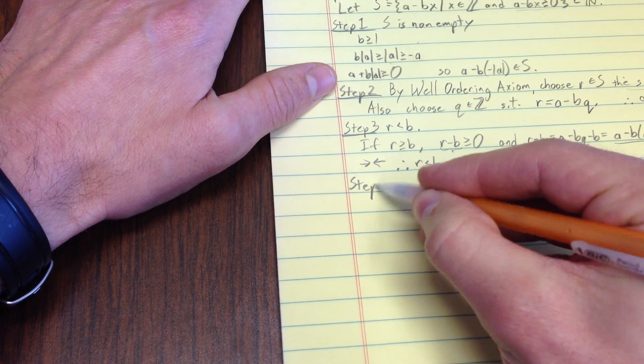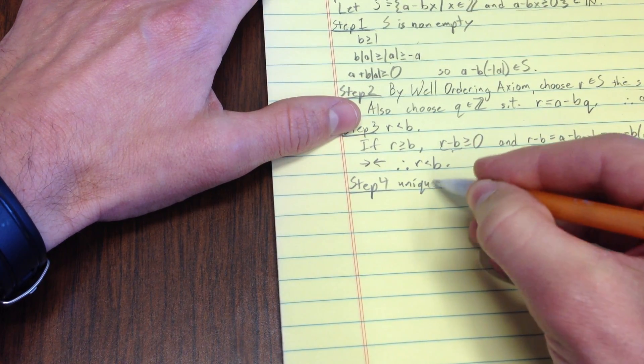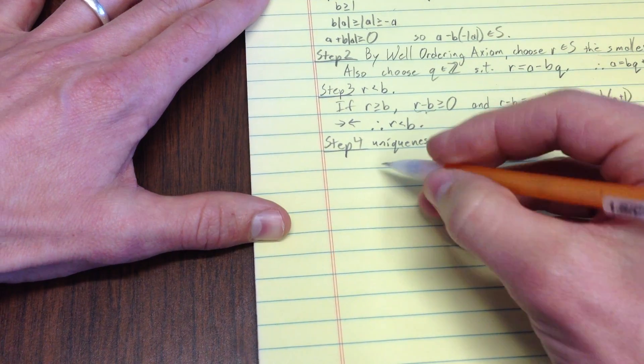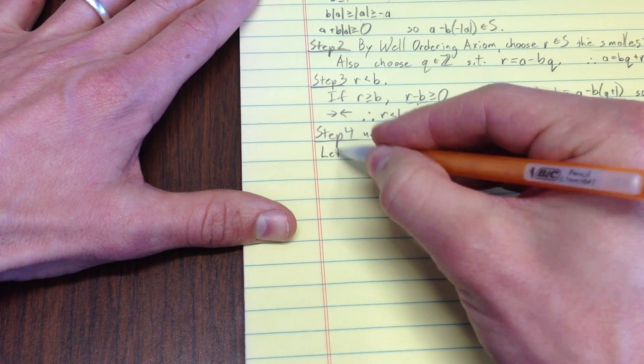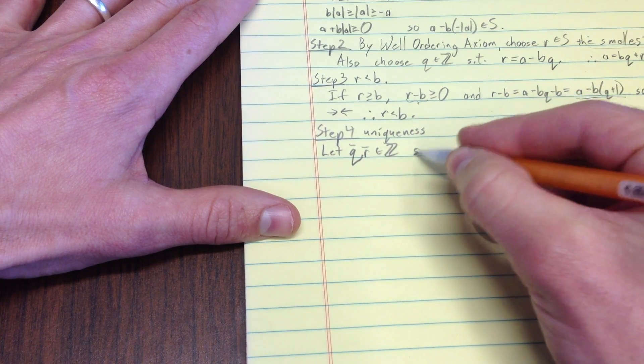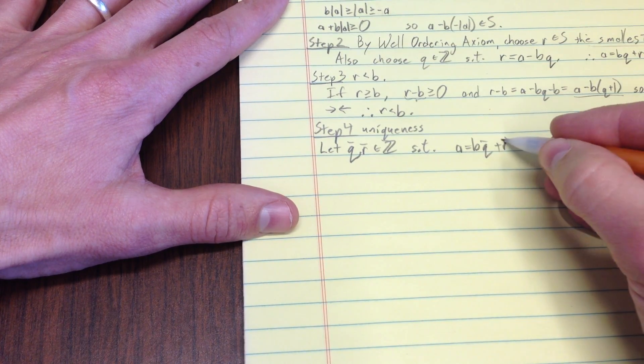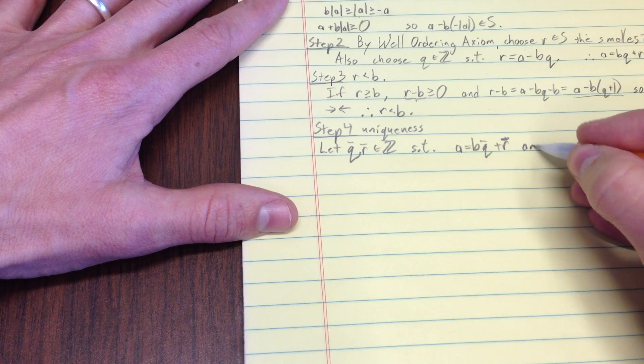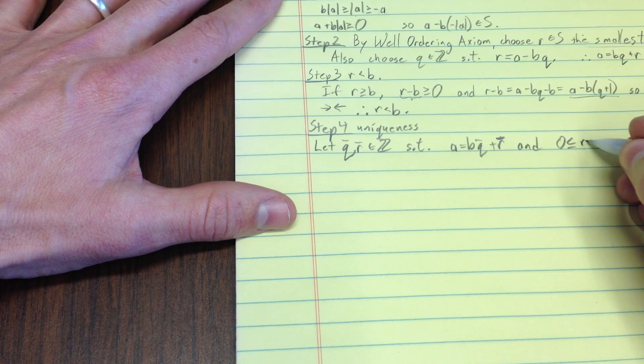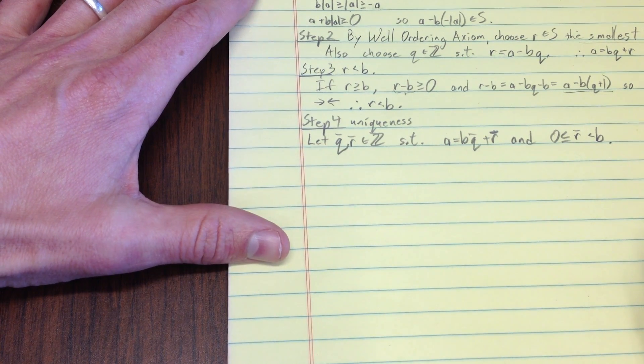Okay, so, last step, uniqueness. Well, let's see. So, what should we do here? I suppose what we ought to do is we ought to let q bar and r bar be in z, such that a equals b q bar plus r bar. And 0 is less than or equal to r bar less than b. What I'd really like to show is I'd like to show q bar equals q and r bar equals r.